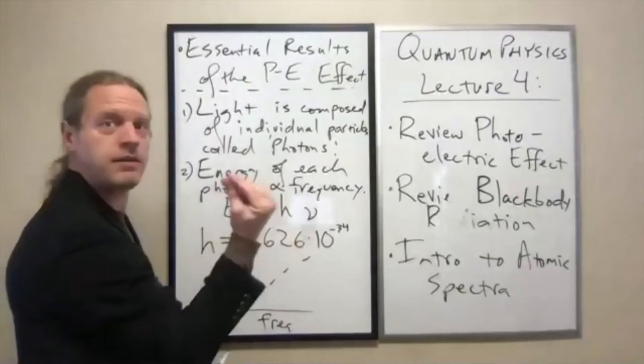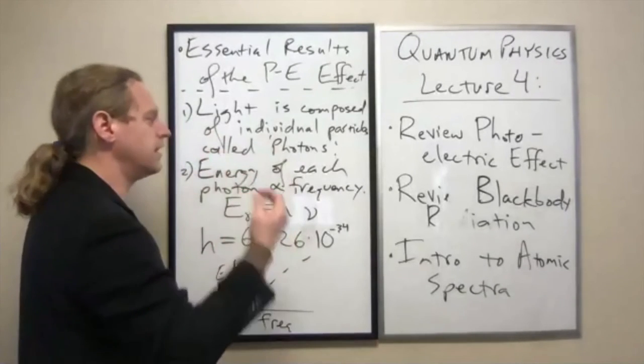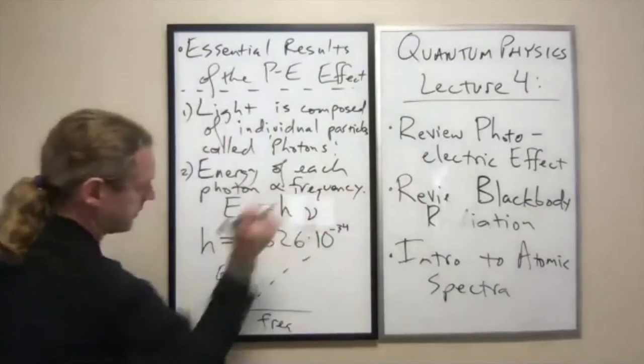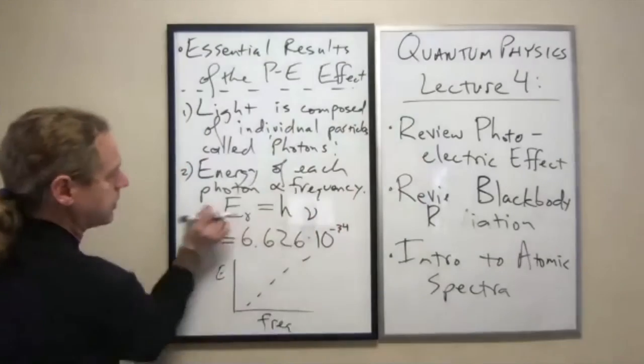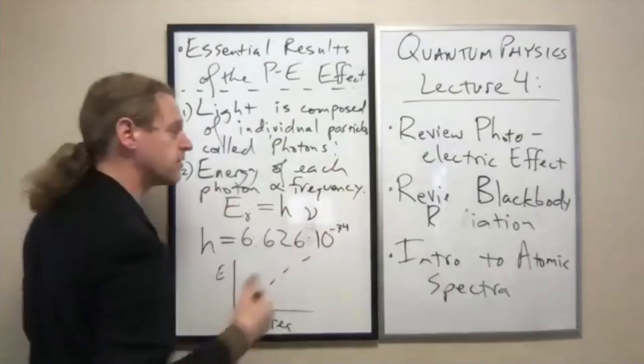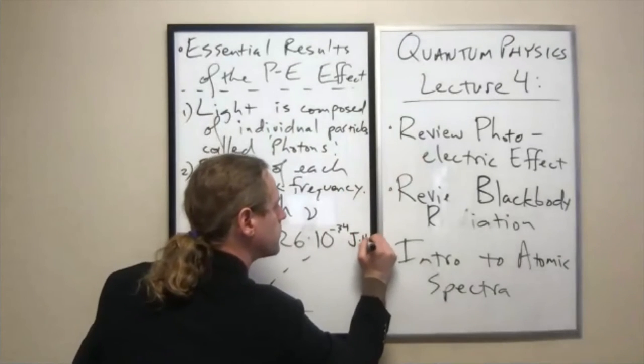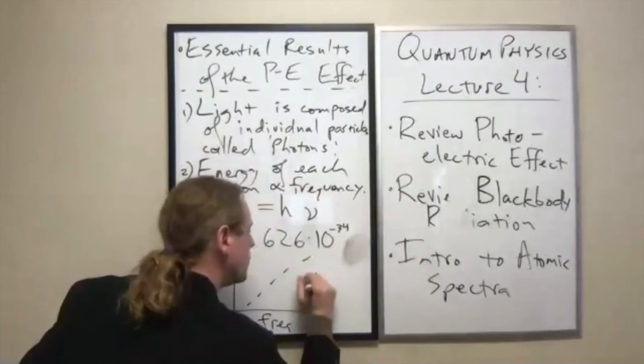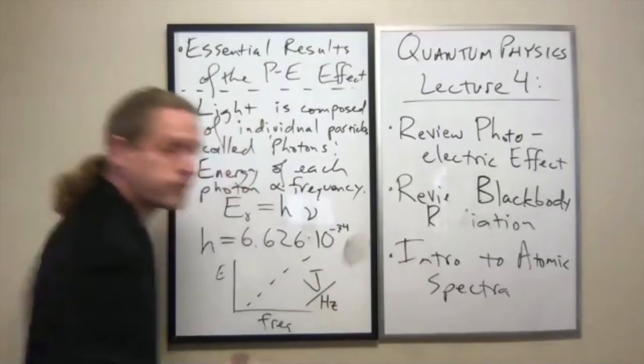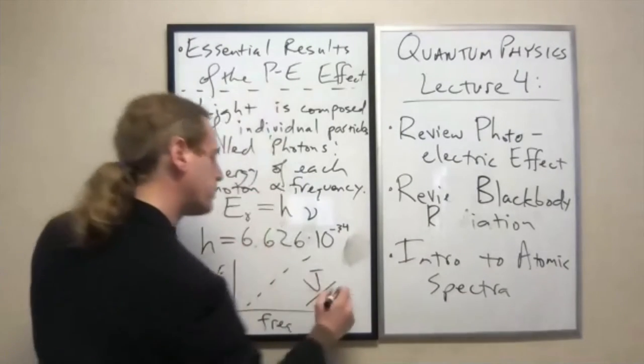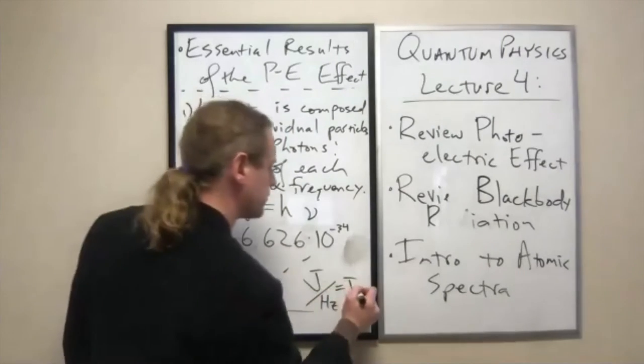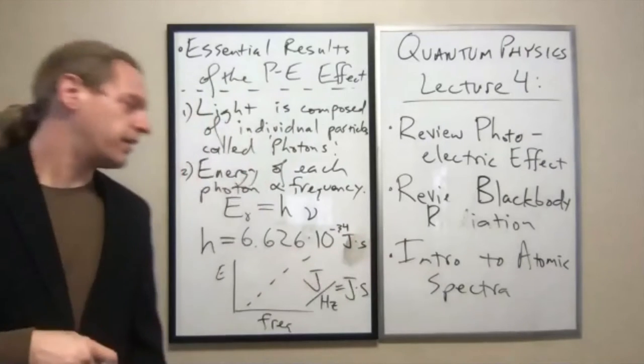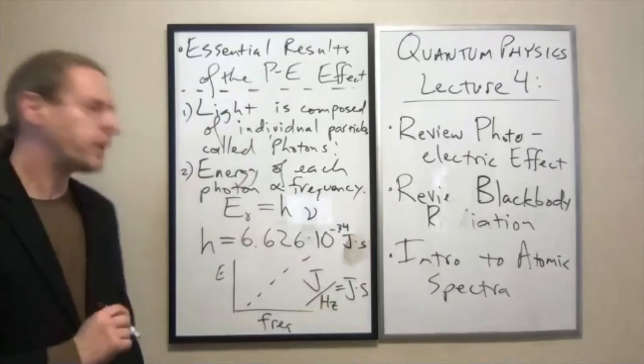The energy of a single photon is tiny, and that's why we don't really detect them with our eyes. You need many, many photons to bring enough energy to be detectable. The units need to spit out joules given hertz, so it's joules per hertz. When you remember that hertz is inverse seconds, joules per hertz is actually joules times seconds. That's the standard SI value for that constant h, and we call that Planck's constant.